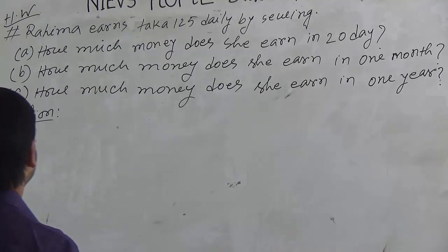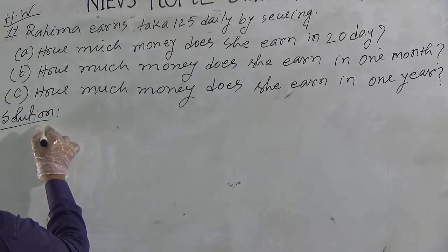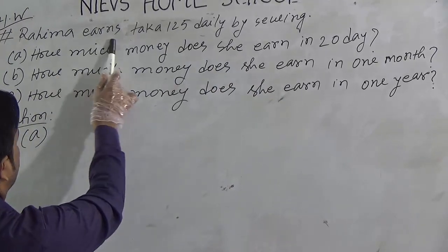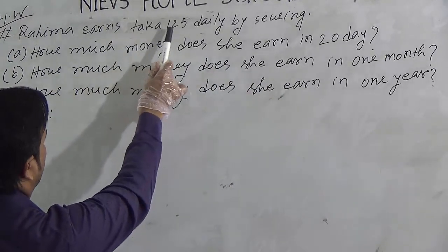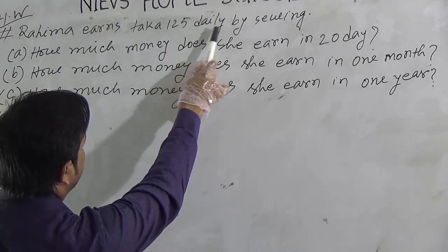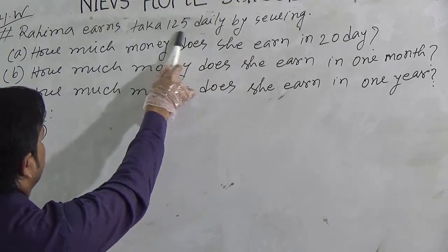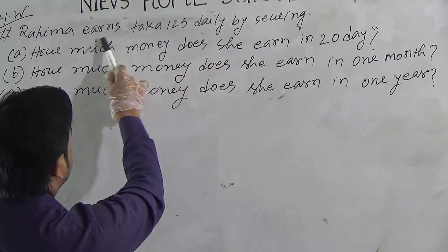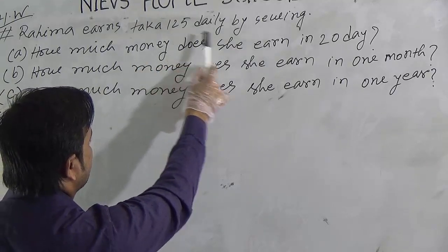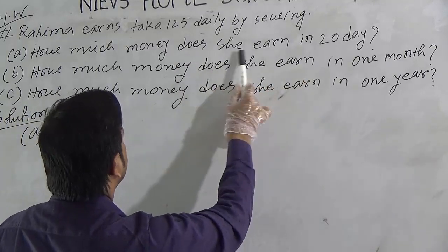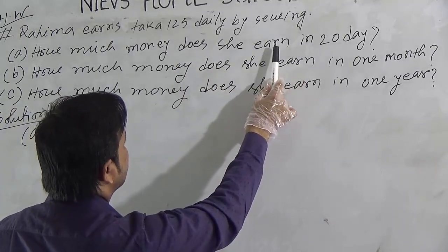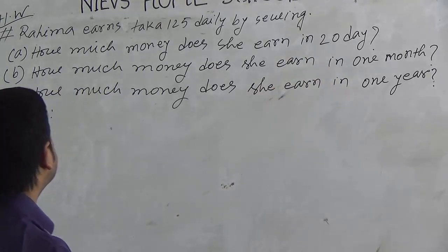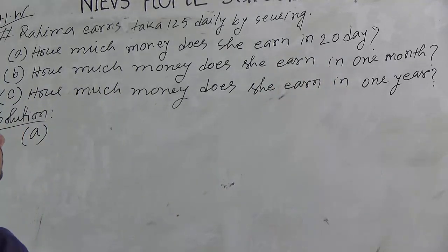Let us solve the question. First question A. Our given information is, Rohima earns Taka 125 daily by saving. This is our given information. Daily means in one day. In one day, Rohima earns 125 Taka. We have to find the money for 20 days.